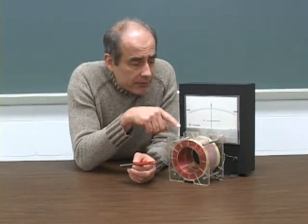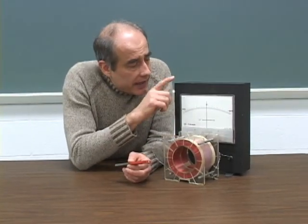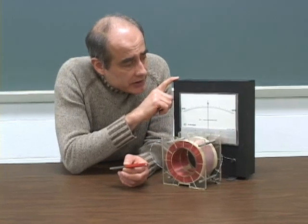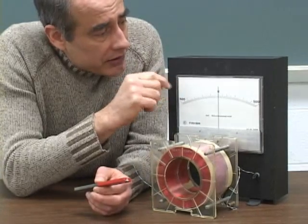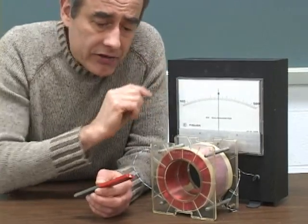Here we have a coil where wire is wrapped around many times and a device here to measure electricity. This device is called a galvanometer. The needle will move either to the right or to the left depending on which way electricity flows.